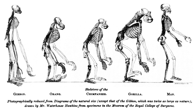Biogeography is the study of the distribution of species and ecosystems in geographic space and through geological time. Organisms and biological communities often vary in a regular fashion along geographic gradients of latitude, elevation, isolation and habitat area. Phytogeography is the branch of biogeography that studies the distribution of plants. Zoogeography is the branch that studies distribution of animals.